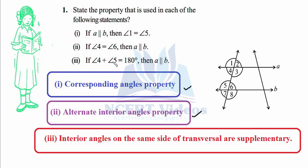The third statement: angle four plus angle five equals 180°. This is the property that interior angles on the same side of a transversal are supplementary. Supplementary means they add to 180° — a learning trick: 'S' comes after 'C' in the alphabet, so supplementary (S) is 180° and complementary (C) is 90°. Since four and five are on the same side of the transversal and the lines are parallel, their sum is 180°. Similarly, angle three plus angle six equals 180°.